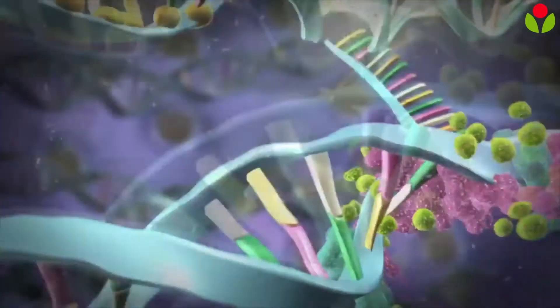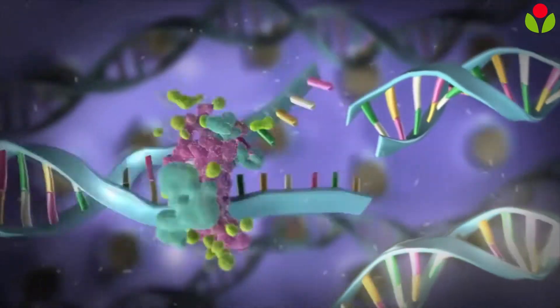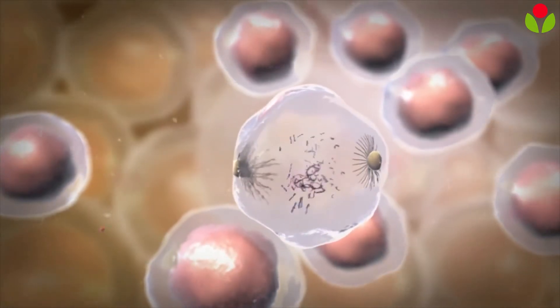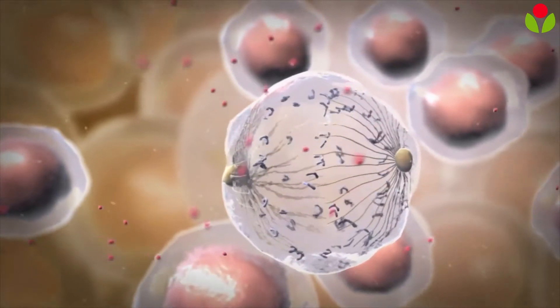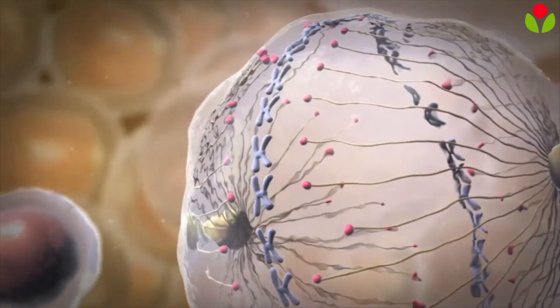By preventing the cell from making a second copy of the DNA, the drugs stop the cells from dividing. Other chemo drugs prevent cells from splitting into two daughter cells. They prevent the DNA from being equally divided between the two cells, thereby preventing cell division.